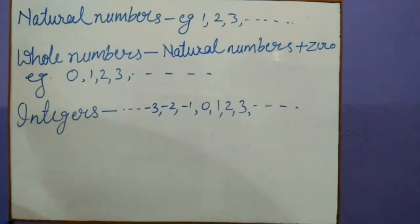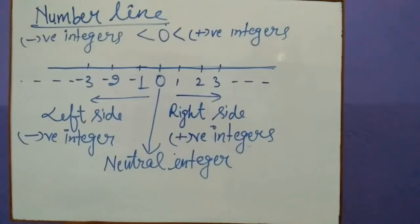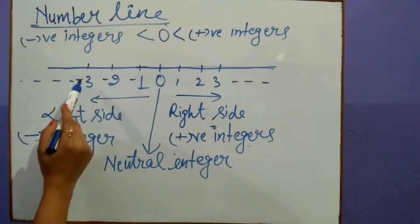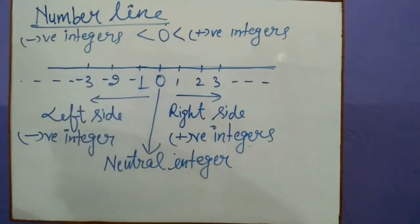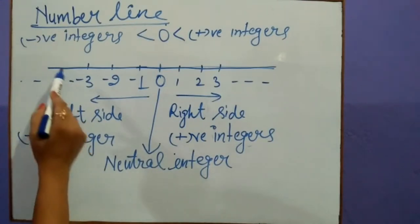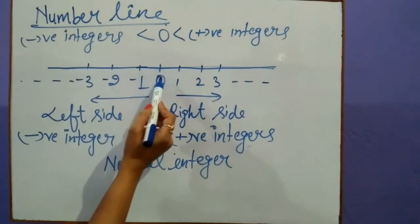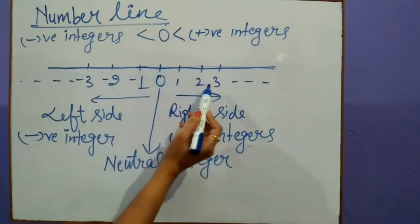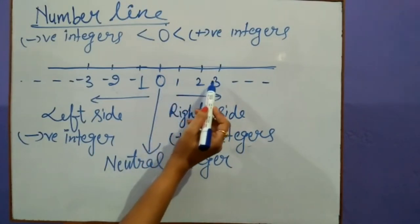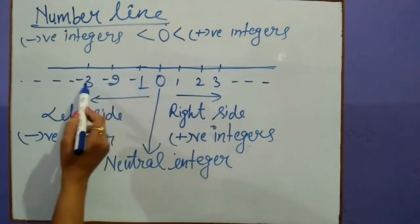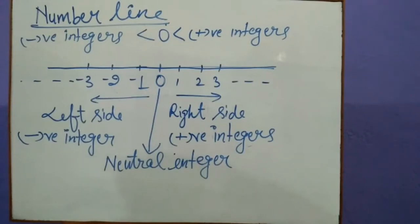Now, how do we represent numbers on a number line? I have already taught you how to represent numbers on a number line. First of all, we draw a horizontal line and at the center we mark 0. To the right side of 0 we write positive integers, and to the left side of 0 we write negative integers.